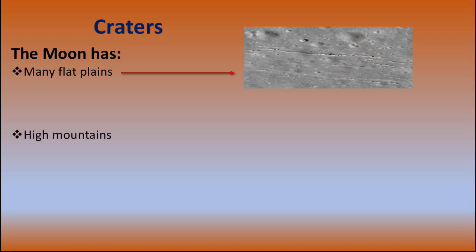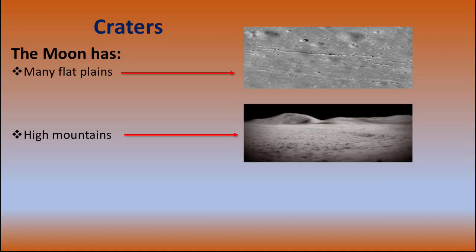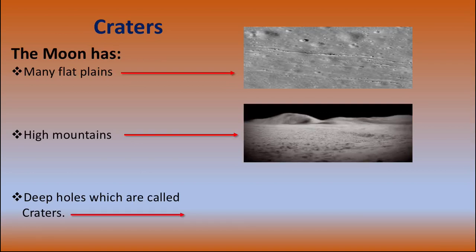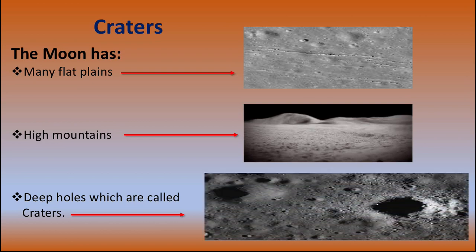On some places there are high mountains, just like the Earth has. You can see in the picture there are high mountains on the surface of the moon. Now, there are also deep holes which are called craters. There are huge craters on the moon. These holes — you can see in the picture — are huge deep holes on the surface of the moon. So the moon has many flat planes, high mountains, and deep holes which are called craters. We have read the three surface features of the moon.